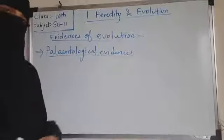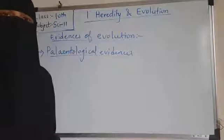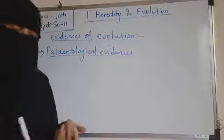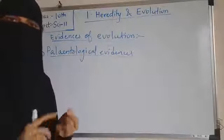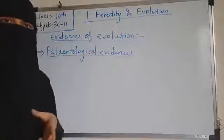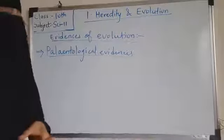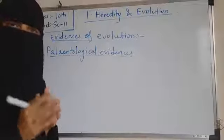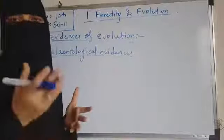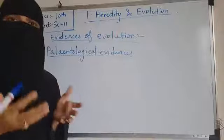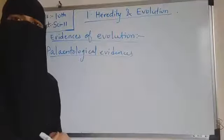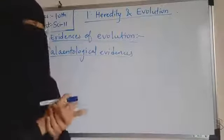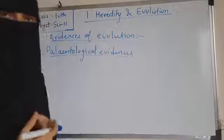We are studying our first chapter, heredity and evolution, and we have been learning about different evidences of evolution. We have seen morphological evidence, anatomical evidence, vestigial organs, and embryological evidence. Now we are going to study paleontological evidences. Paleontology is the branch of science which studies fossils of animals and plants. Dead remains of plants and animals which are preserved underground are called fossils.